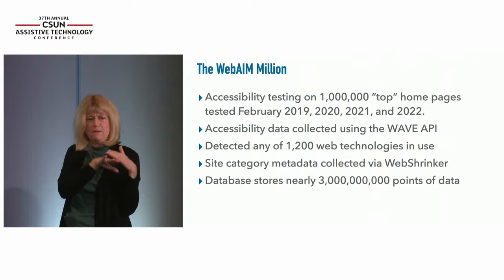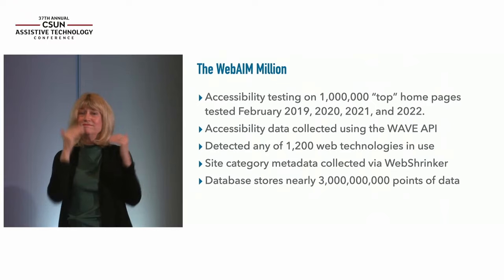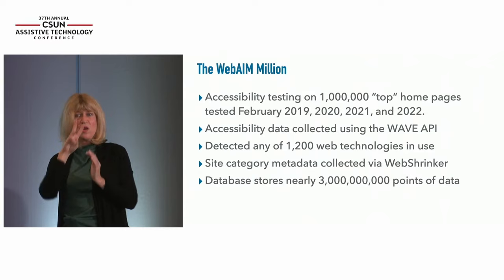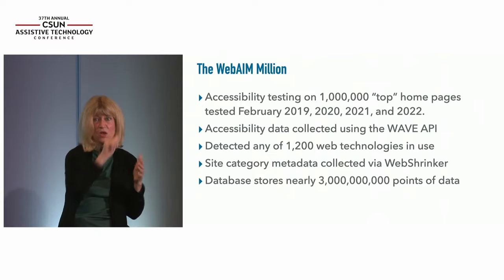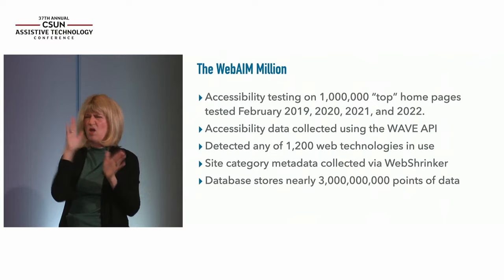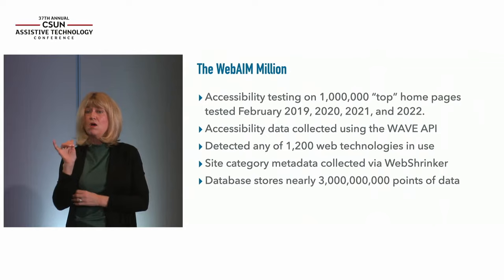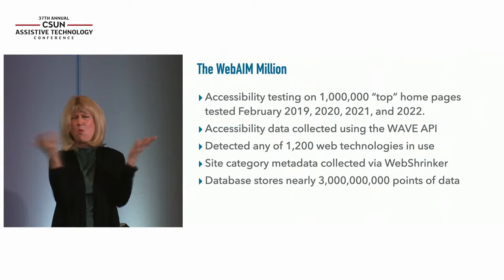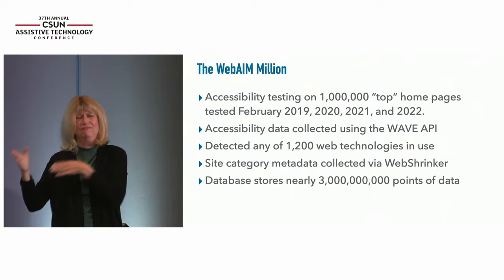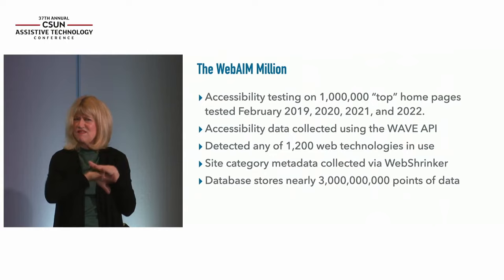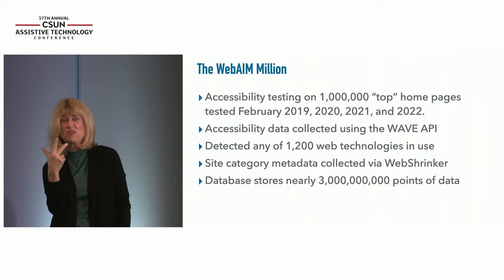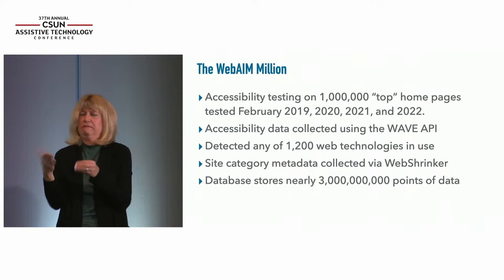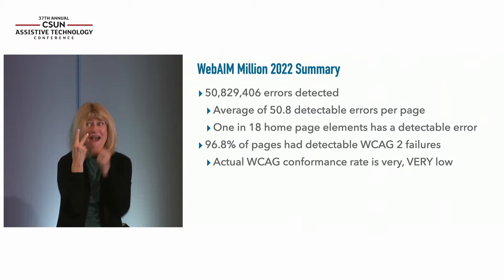We also collect site technology data, analyzing up to 1,200 different web technologies in use, which allows us to correlate accessibility data with technology usage — things like jQuery, WordPress, or advertising. We also collect site category information to see if certain categories of the web are performing differently when it comes to accessibility. We now have a very large database of about 3 billion data points overall, and there's far more there than we've been able to analyze. You're getting a sneak peek — nobody but me has seen these numbers yet.